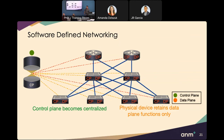The idea behind centralized wireless control is you want a consistent experience throughout your wireless environment — consistent authentication, consistent roaming — and it's simply impossible to log into thousands of APs and configure them all individually. That same concept from wireless needs to filter down to the rest of the network environment.